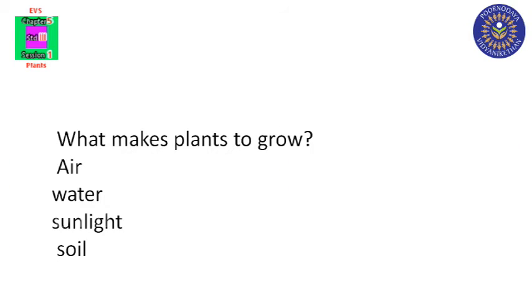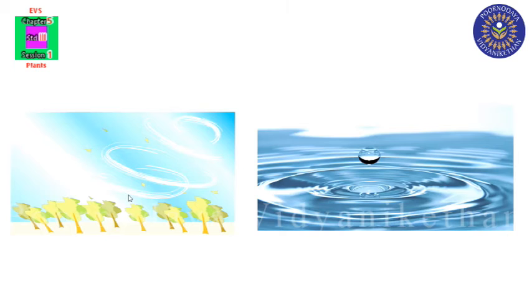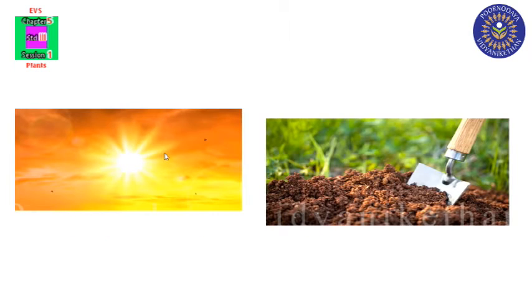What makes plants to grow? Air, water, sunlight, and soil. All these things make plants to grow.